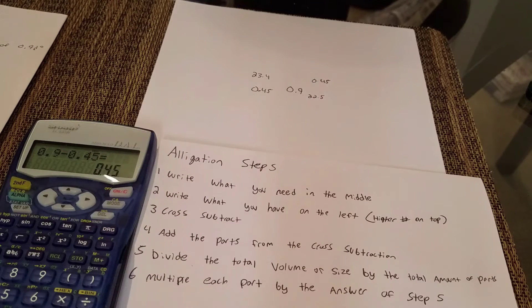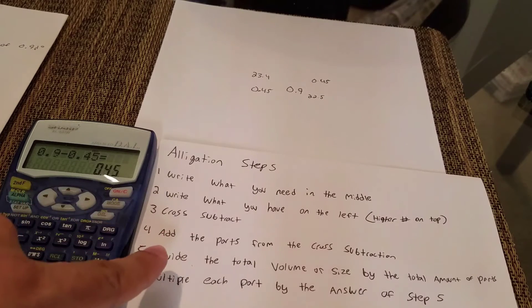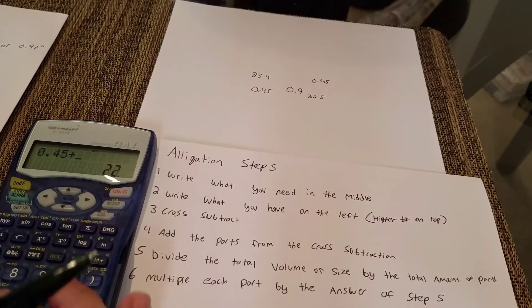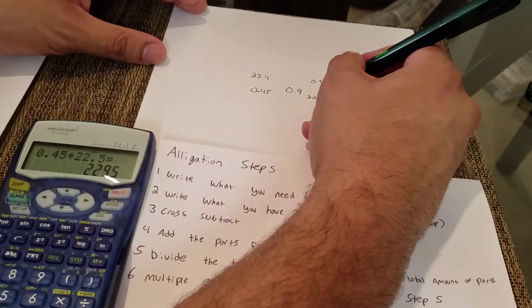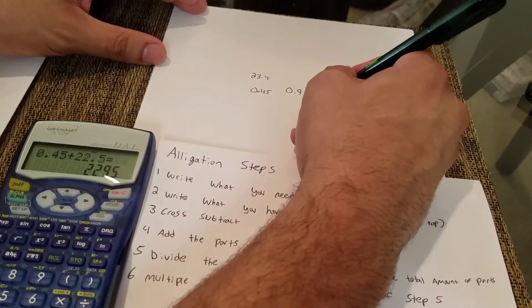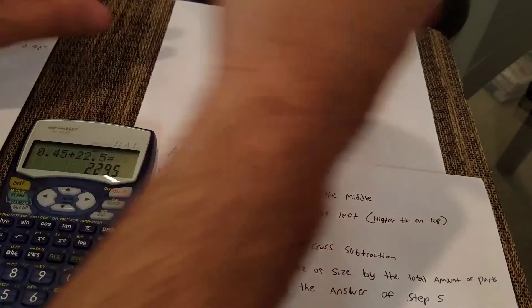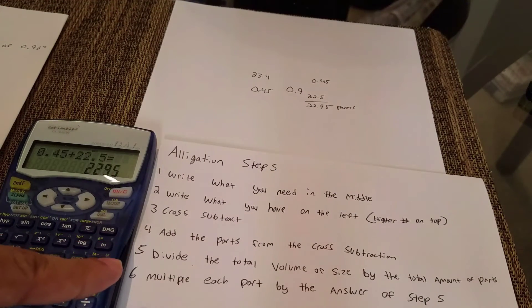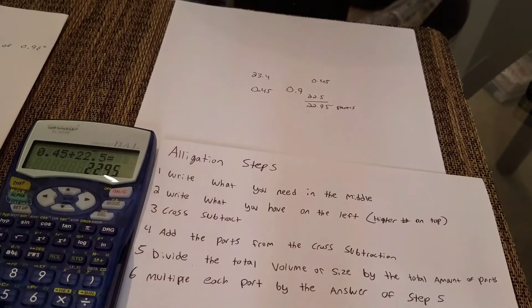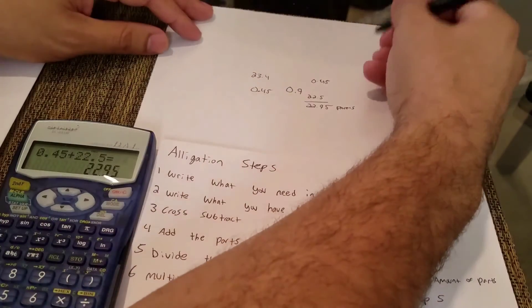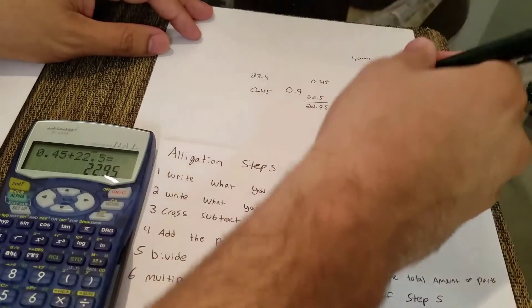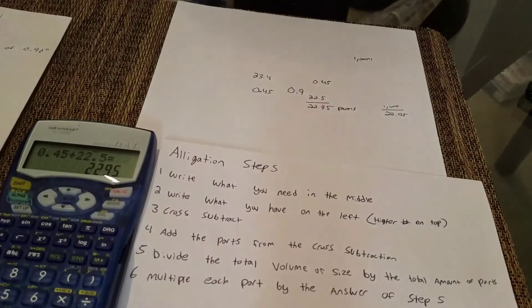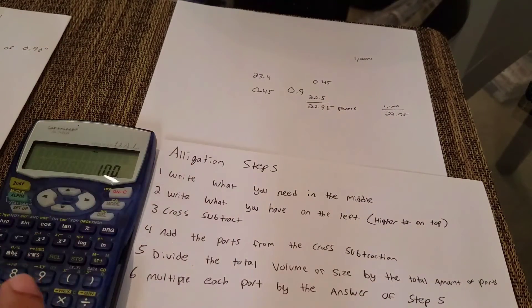The next step here says after cross subtracting, add the parts from the cross subtraction. So we're gonna add the parts: 0.45 plus 22.5, and that makes 22.95. Those are the total parts. Then it says divide the total volume or size by the total amount of parts. So the volume that we need for this particular problem is 1000 mLs, so we're gonna take 1000 divided by 22.95. So I'm gonna do it here in a calculator: 1000 divided by 22.95, that comes out to 43.57.